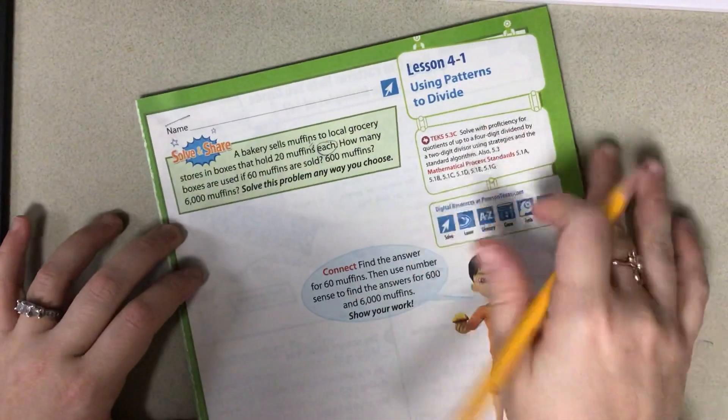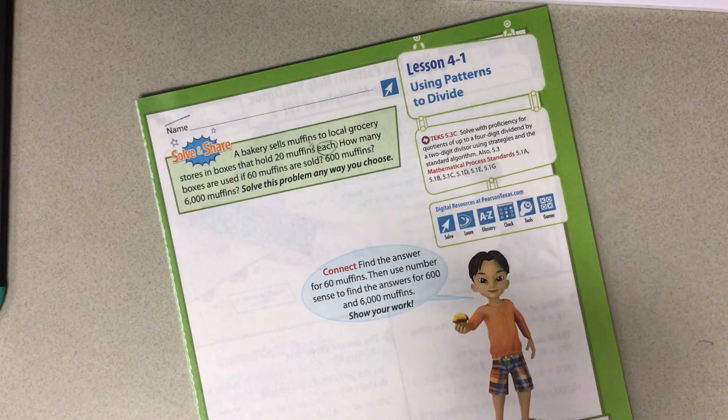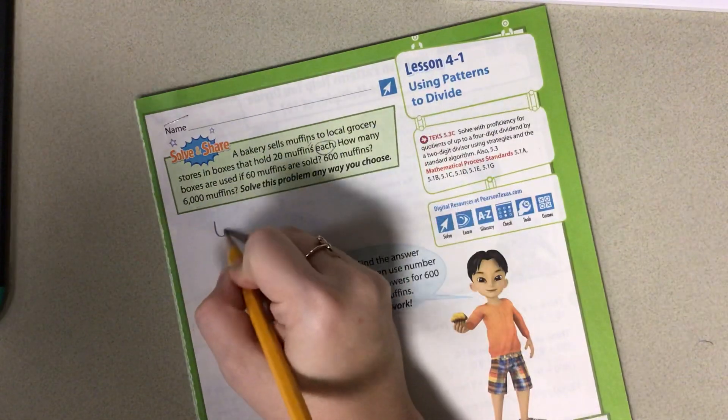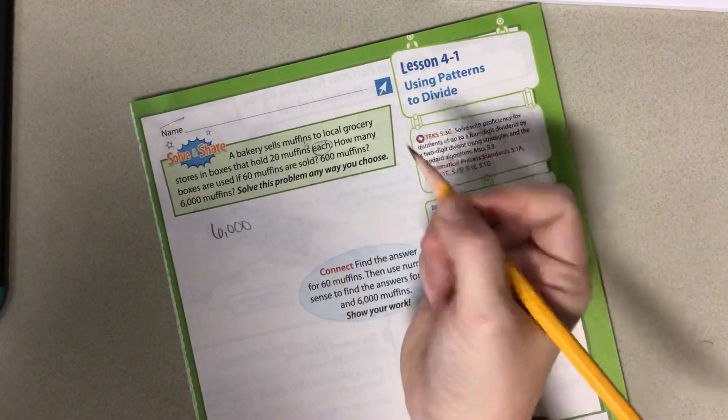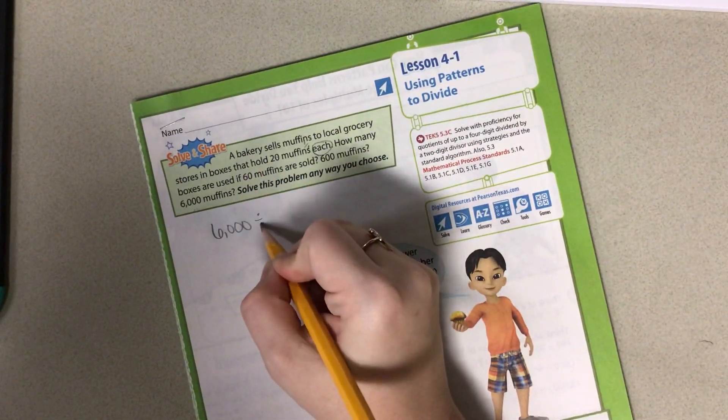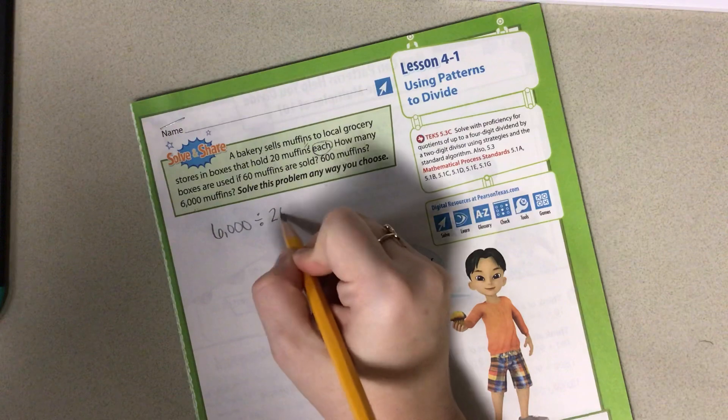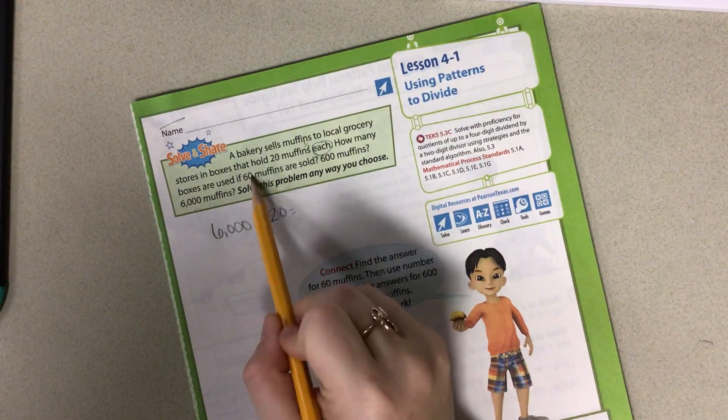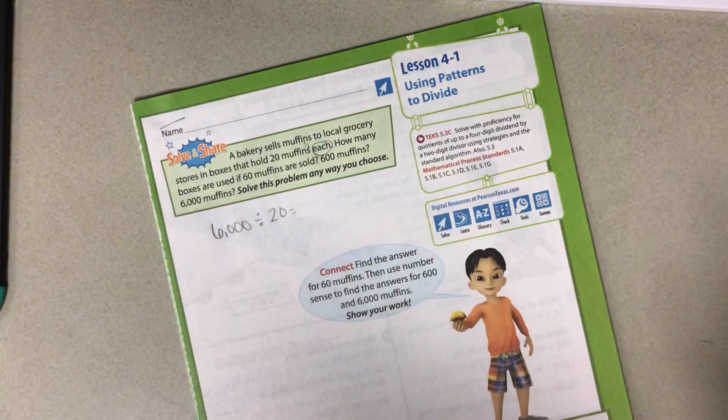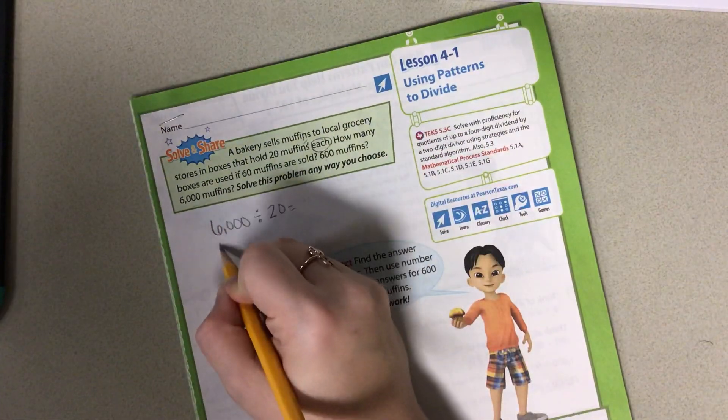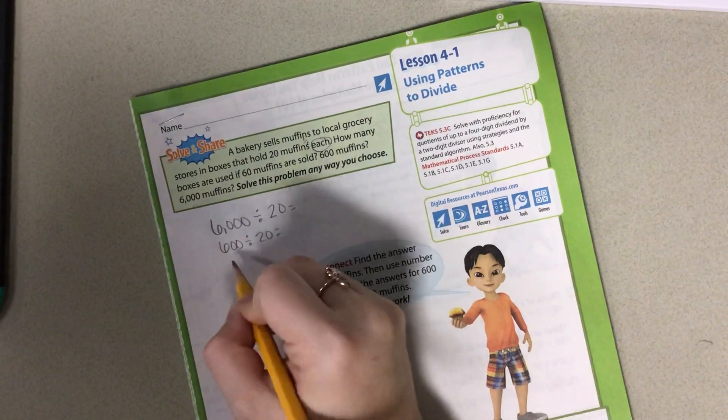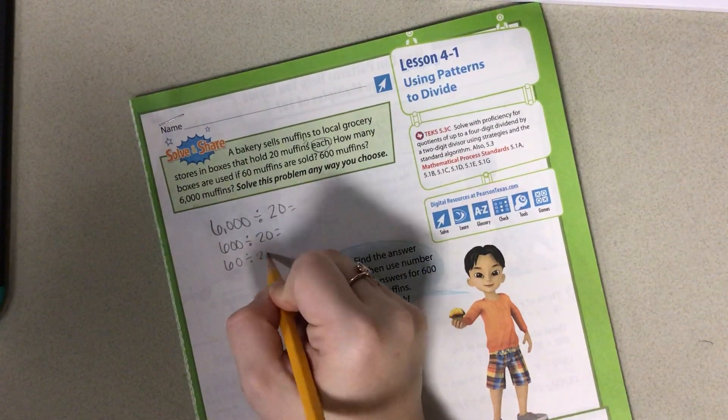We know we're going to have our largest one is 6,000 muffins. And we know we're dividing them into groups of 20 because that equals one box. We can do the 6,000, the 60, and the 600 almost all at the same time. But I'm going to write down each of our problems here because I want the answer to each of these problems.